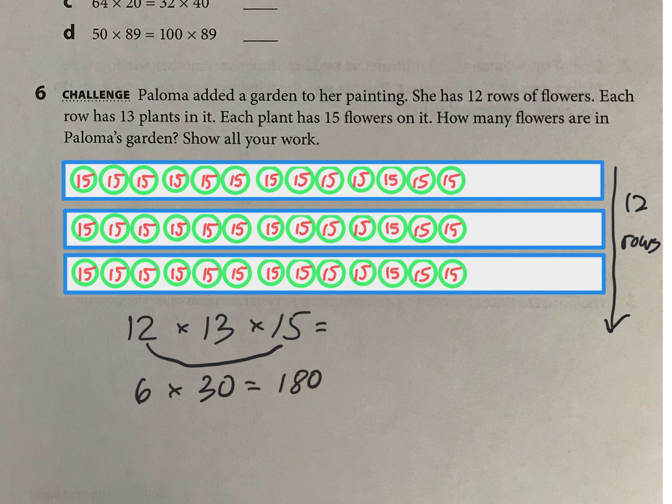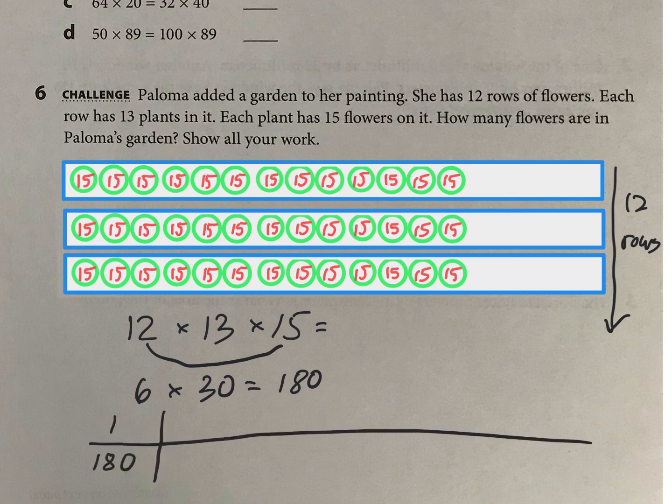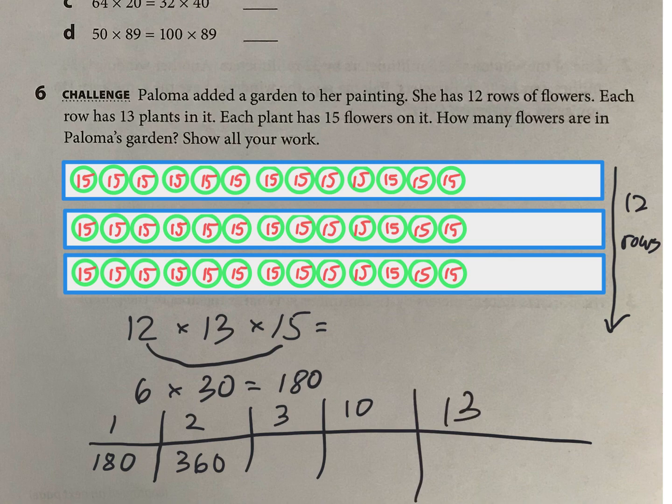Now I need to do 180 times 13 next. Now I might use a ratio table for that. So I would probably go 2 times 180 is 360. I would try to figure out what is 3. Then 10 times 180 is pretty easy. And then I've got my 13 to finish it up.